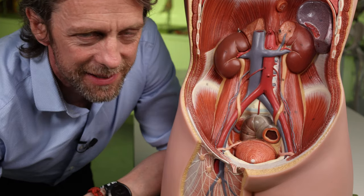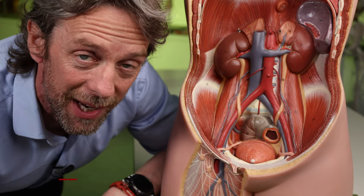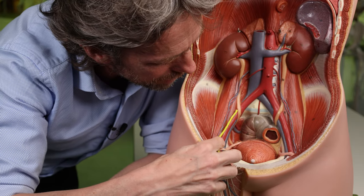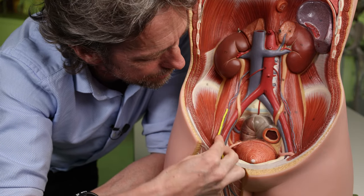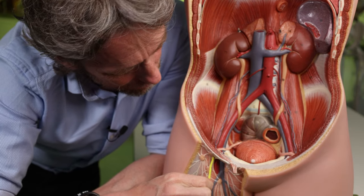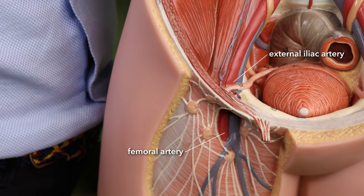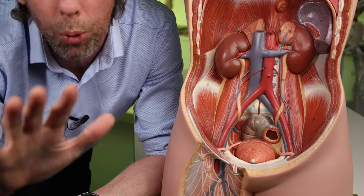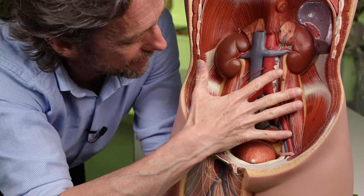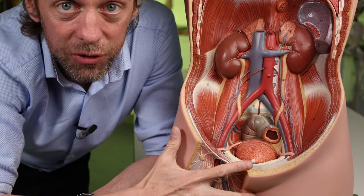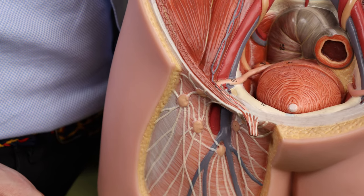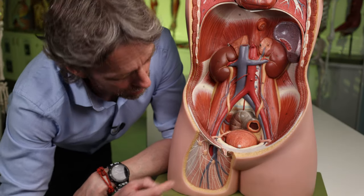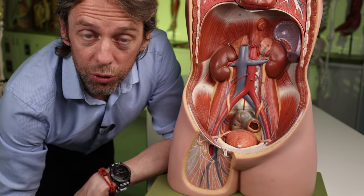The femoral branch — also called the lumboinguinal nerve — will run lateral to the external iliac artery and deep to the inguinal ligament to appear down here. It will pierce the femoral sheath, and it will also pierce the fascia latae. All that is saying is that whilst the genitofemoral nerve is retroperitoneal and deep to all the fascia, it will make its way superficially towards the skin, and then will be sensory from the skin of the proximal anterior thigh and a little bit of medial thigh as well — the skin superficial to the femoral triangle.